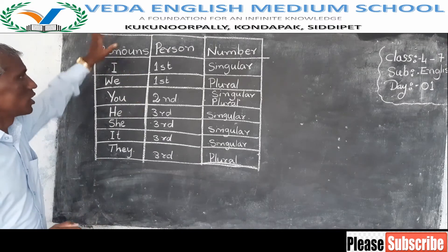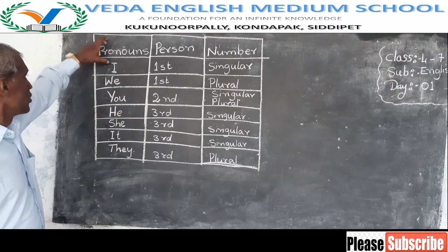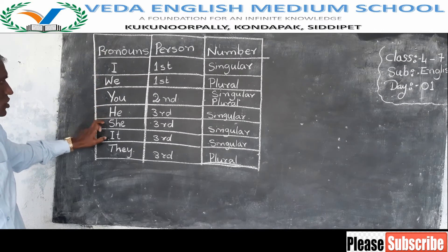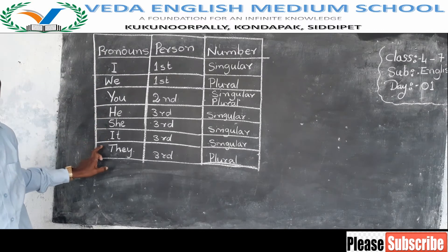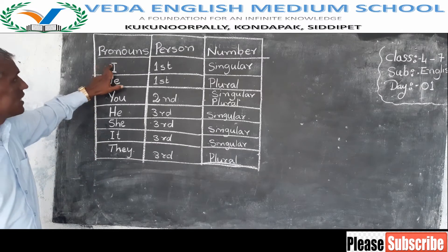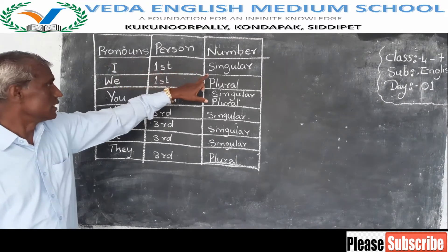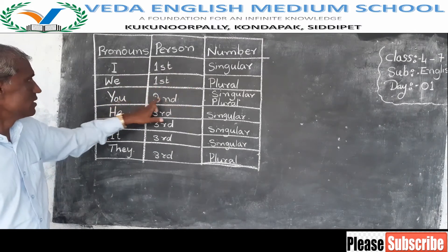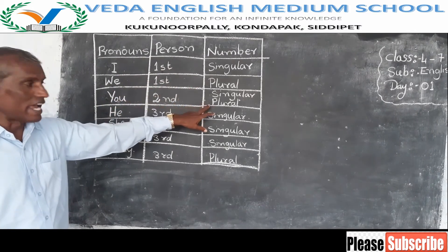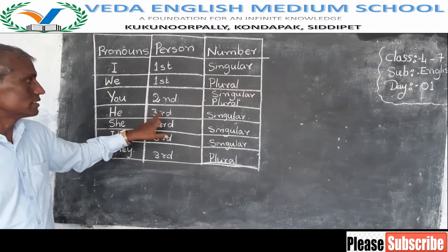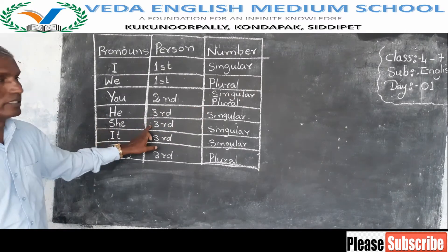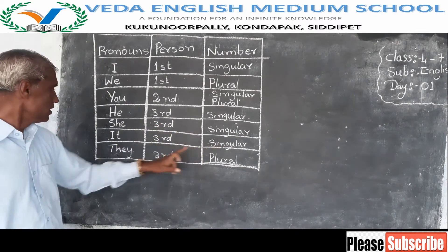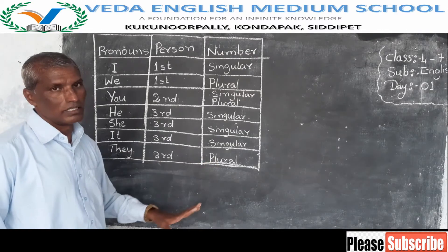So to summarize: the pronouns are I, we, you, he, she, it, and they. I is the first person singular. We is the first person plural. You is the second person singular and plural. He is the third person singular. She is the third person singular. It is the third person singular. They is the third person plural.